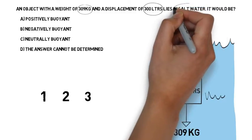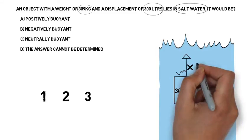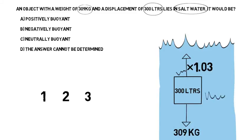And then you look at the type of water it's in. It's in salt water. What is the weight of salt water? It's 1.03 kilograms per litre, what we call the salt water constant.